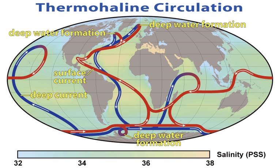The thermohaline circulation plays an important role in supplying heat to the polar regions, and thus in regulating the amount of sea ice in these regions, although poleward heat transport outside the tropics is considerably larger in the atmosphere than in the ocean. Changes in the thermohaline circulation are thought to have significant impacts on the Earth's radiation budget. Large influxes of low-density meltwater from Lake Agassiz and deglaciation in North America are thought to have led to a shifting of deep water formation in the extreme North Atlantic and caused the climate period in Europe known as the Younger Dryas.